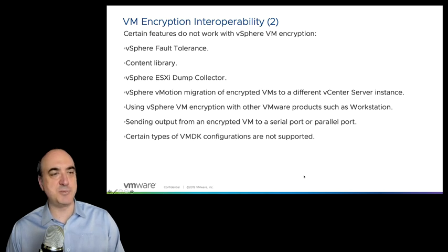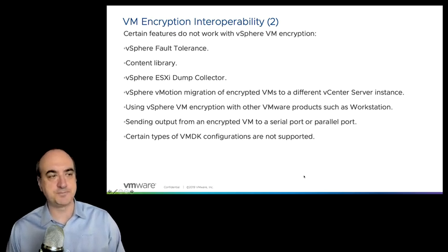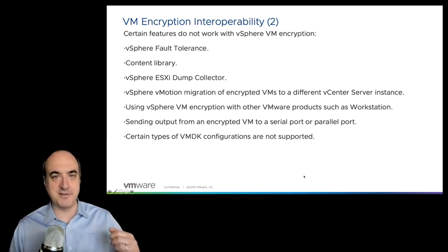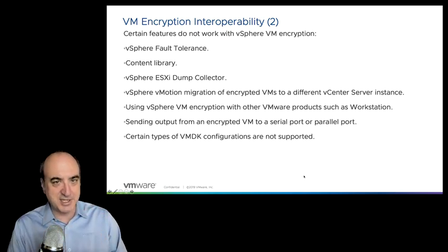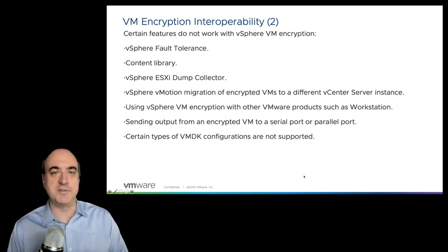Using vSphere VM encryption with other VMware products such as Workstation is not supported. This is a vSphere feature — if you encrypt a VM, export it, and import it into Workstation, Workstation does not have a mechanism to decrypt it. Also, setting output from an encrypted VM to a serial port or parallel port is not supported. That breaks the point of encryption — you're taking all the VM's disk I/O and sending it down a secure encrypted channel, and redirecting data to another port breaks that secure channel. Additionally, certain types of VM vDGA configurations are not supported.